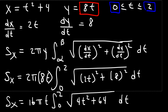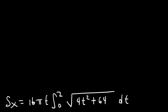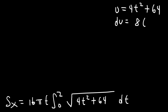Now let's focus on evaluating this integral. The best technique to use right now is u-substitution. So we're going to make u equal to 4t² plus 64. du is going to be 8t dt, and solving for dt, that's going to be du divided by 8t.